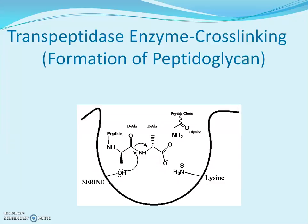Looking at the transpeptidase structure, we can see the binding residues of amino acids. The serine residue is a very important residue involved in peptidoglycan formation. The last two amino acids in the peptide are alanine residues. The serine hydroxyl group attacks the carbonyl of one of the alanine residues and gets attached to it, causing removal of one alanine and thereby decreasing one amino acid from the peptide structure.